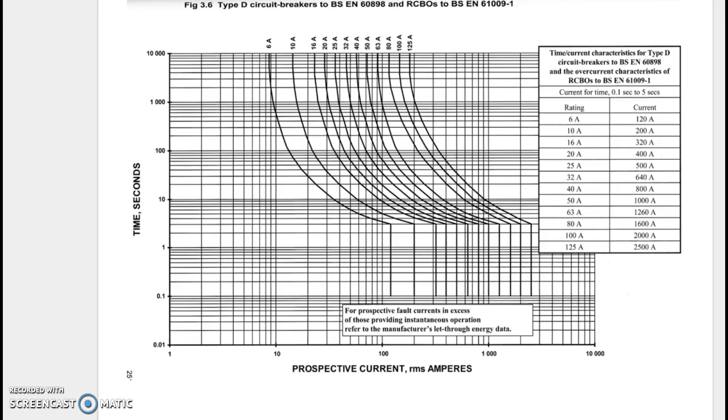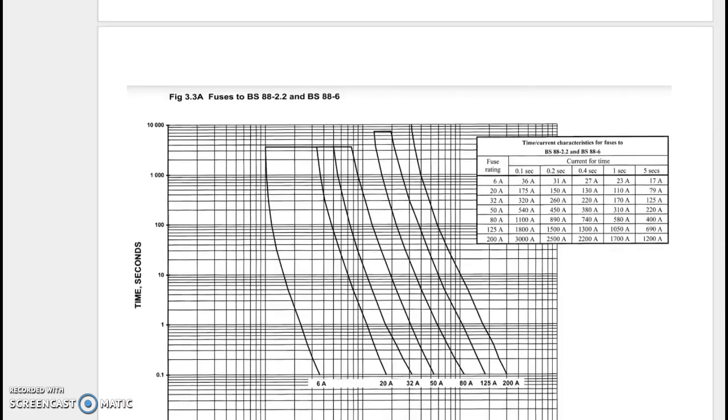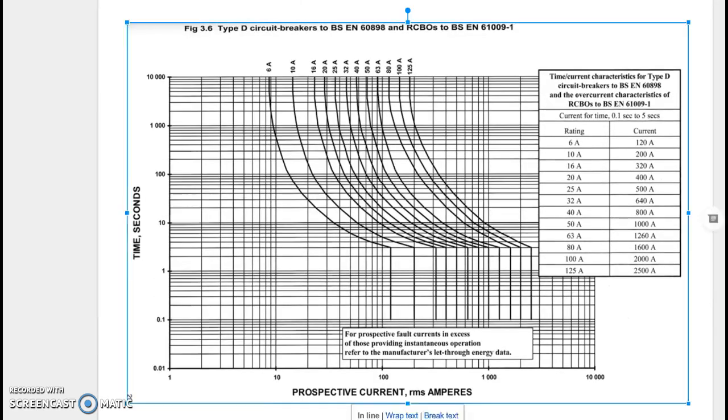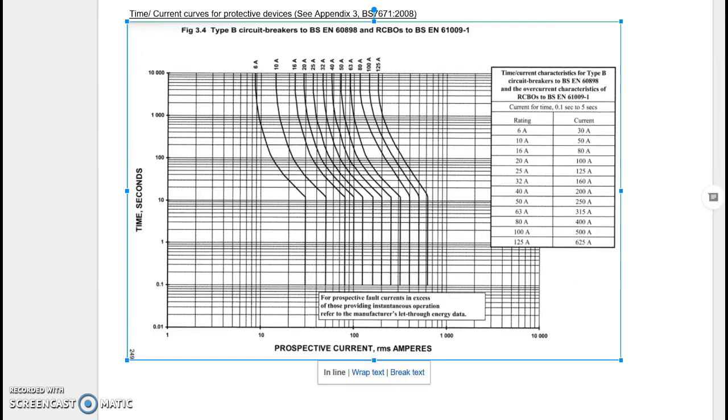Here we have the circuit breakers. You can see the big curves. That's the type D, so the type D at 6 amps needs 120 amps, that's a huge amount. Be careful those of you who change for nuisance tripping from a C type to a D type, make sure that your impedance is low enough. On a C type circuit breaker, a 6 amp device needs a current of 60 amps, it's coming down.